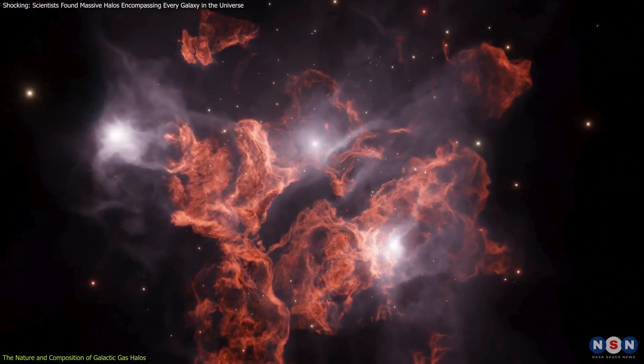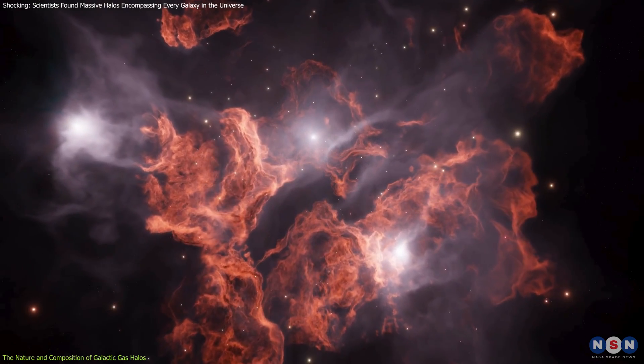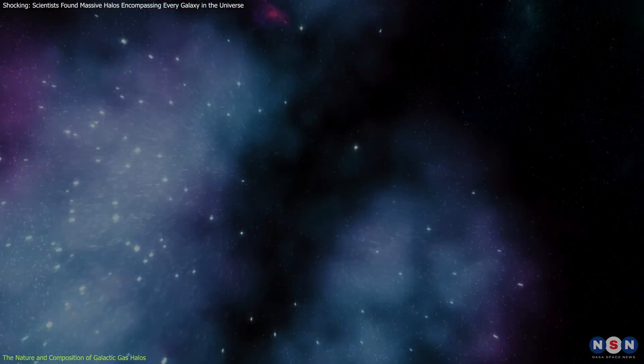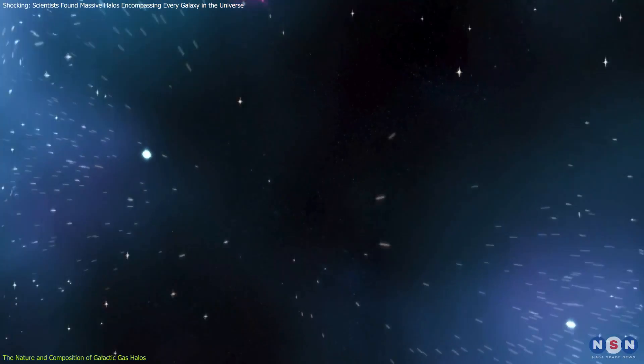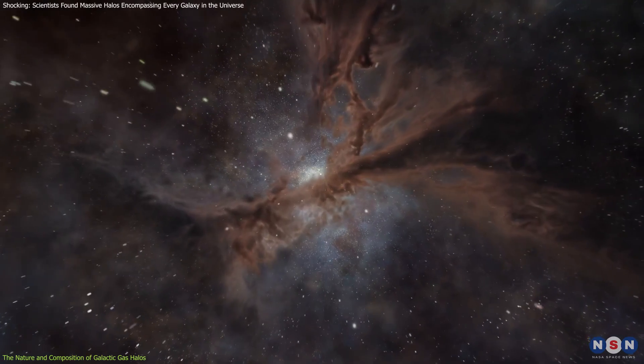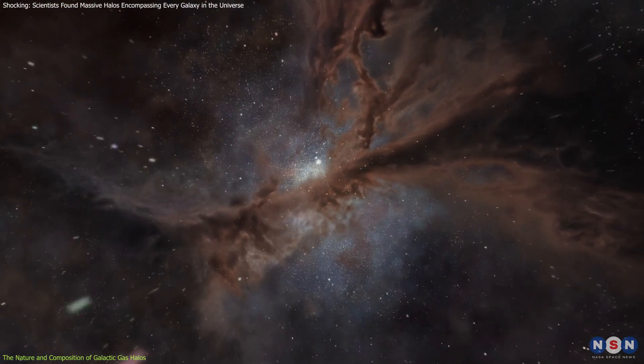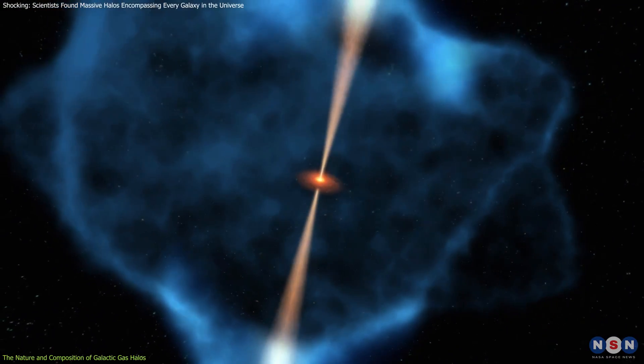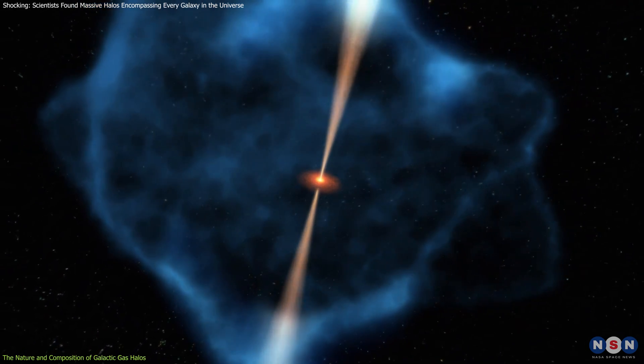Some areas within the halos may have denser concentrations of certain elements, while others might be almost completely void. This diversity likely reflects a complicated history of galactic winds, gas inflows, and outflows that have shaped the halo over billions of years.